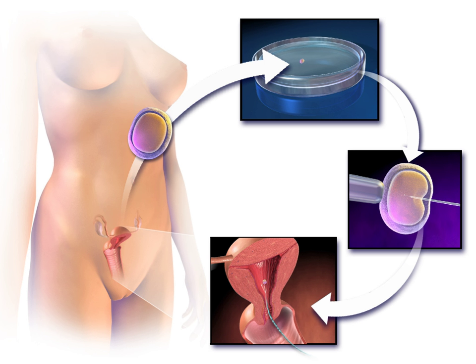Embryo transfer is the step in the process whereby one or several embryos are placed into the uterus of the female with the intent to establish a pregnancy. Less commonly used is assisted zona hatching, performed shortly before the embryo is transferred to the uterus. A small opening is made in the outer layer surrounding the egg in order to help the embryo hatch out and aid in the implantation process.